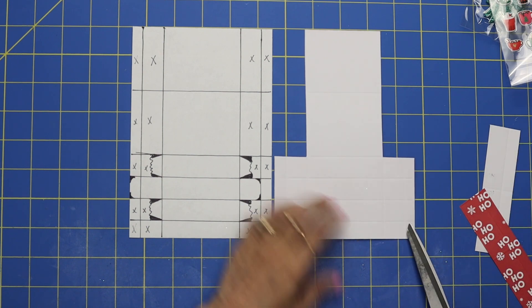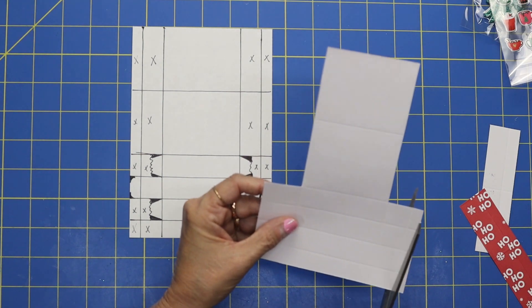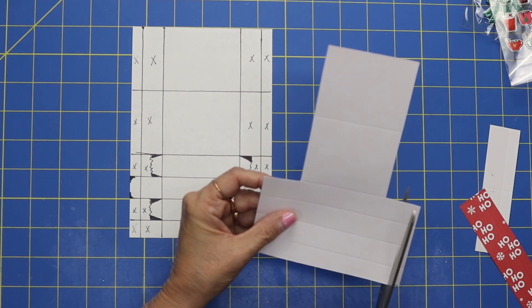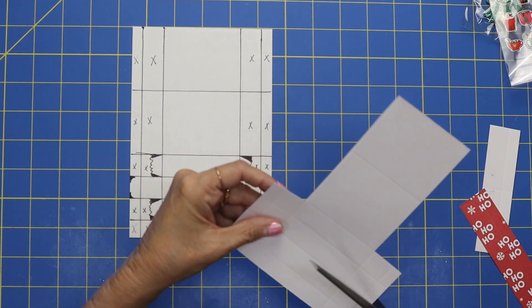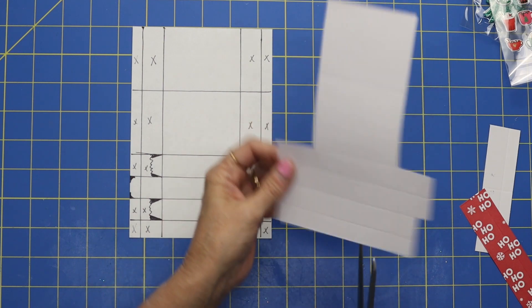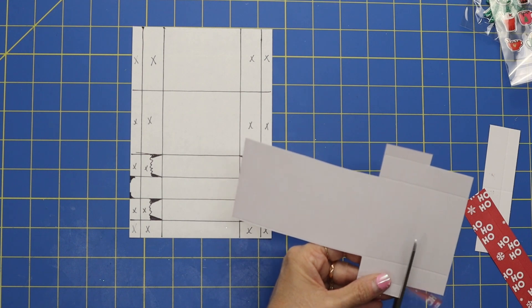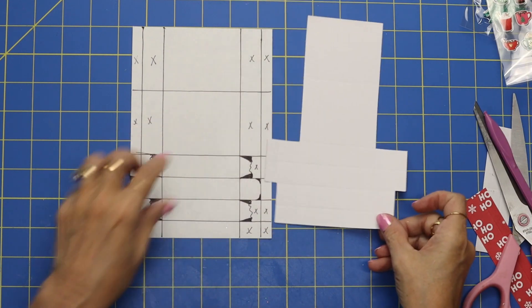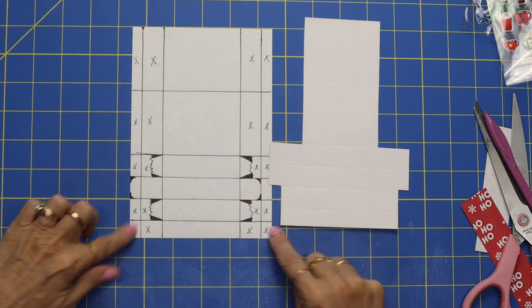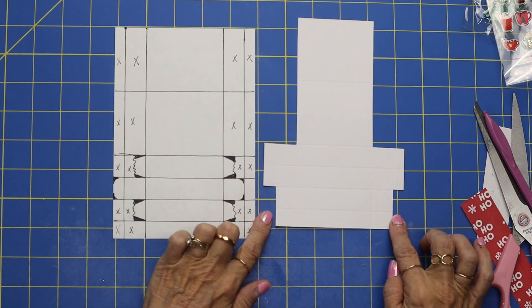Let's cut out these two bottom squares and we'll just kind of do this nice and slow together. So if you have any questions you know we won't get too far ahead. So I'm just cutting out...